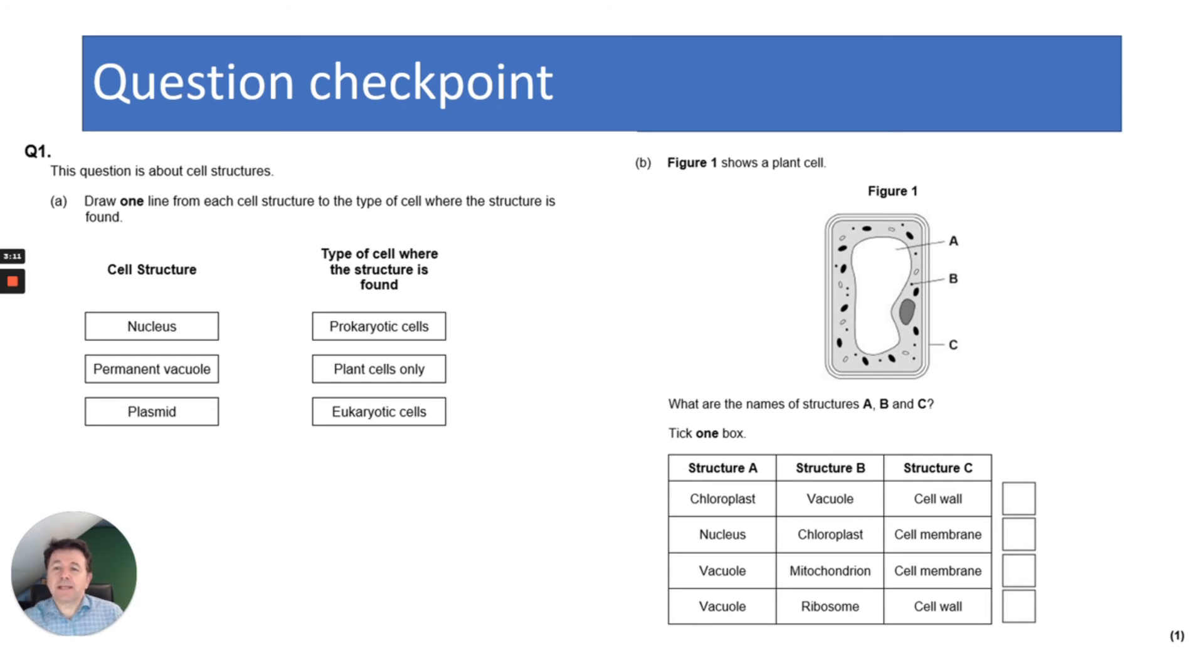Okay, so let's have a look. The first question says draw one line from each cell structure to the type of cell where the structure is found. So the nucleus is a eukaryotic cell, permanent vacuole is found in plant cells only, and plasmids are found in prokaryotic cells.